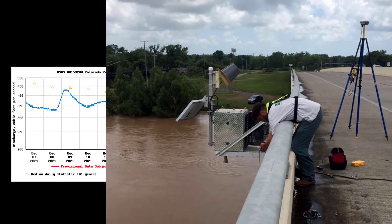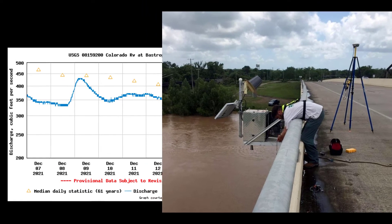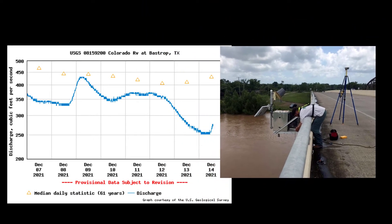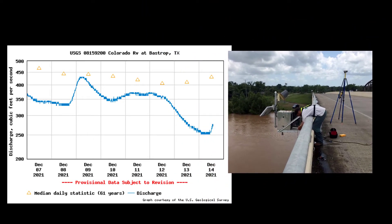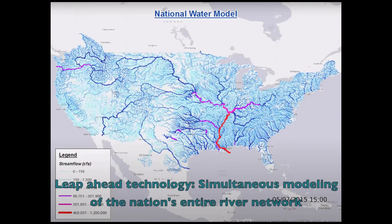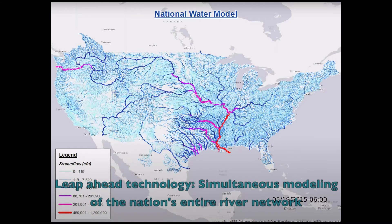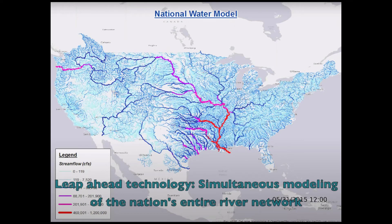Traditionally, retrospective, real-time, and predictive floodplain mapping has been limited only to areas where a stream gauge was installed. The advent of the National Weather Service's National Water Model now provides a continuously operating hydrologic simulation of the continental United States. From this hydrologic model, current and predictive flow rates are computed hourly for 2.7 million stream reaches, negating a gauge requirement for floodplain mapping.